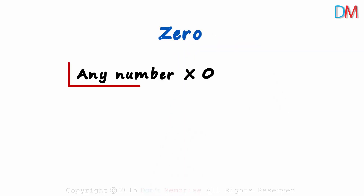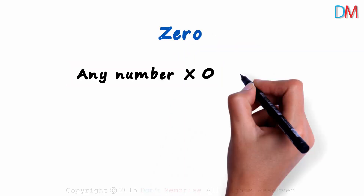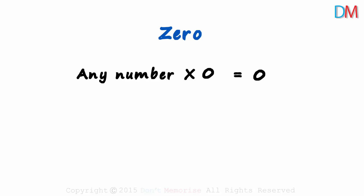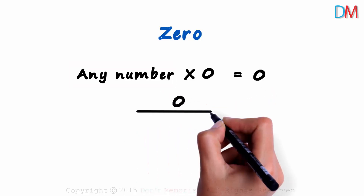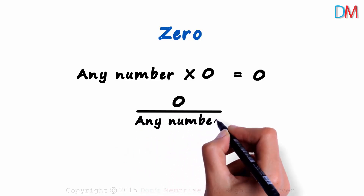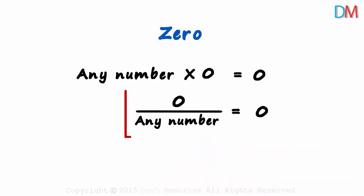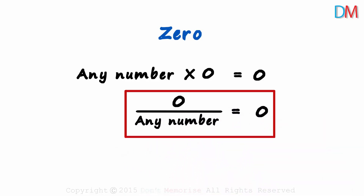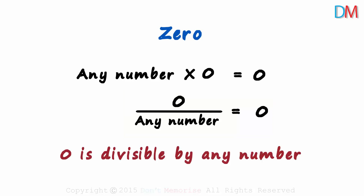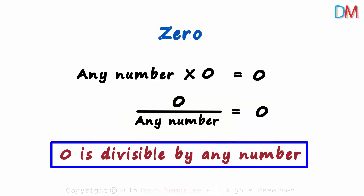Before we move on to the shortcuts, we need to know something about the number zero. Any number multiplied by zero results in a zero. Transposing any number to the other side, we can say that zero divided by any number will result in a zero. This tells us that the number zero is divisible by any non-zero number.